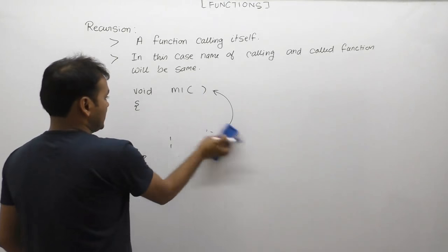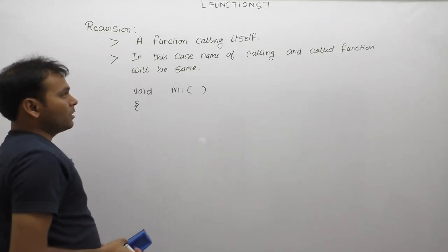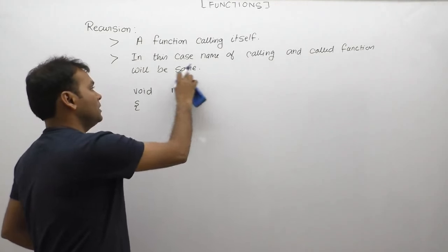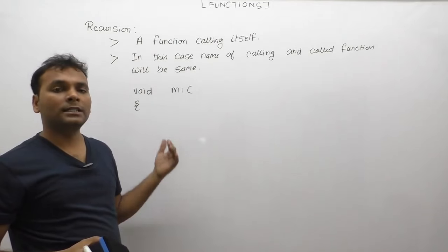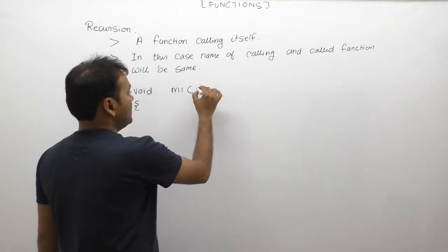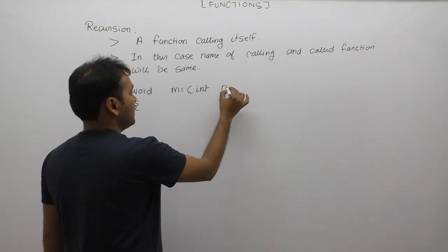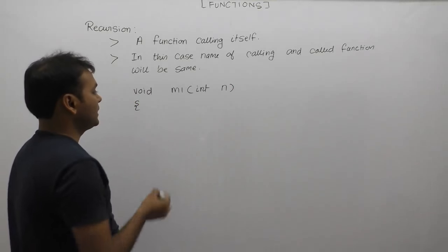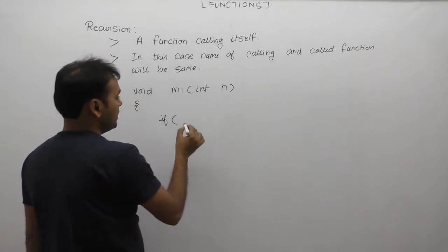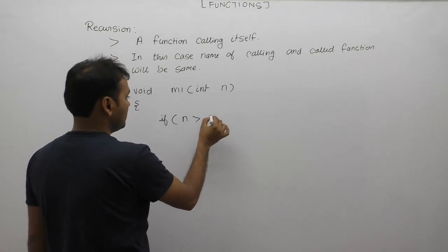Let's see how to solve problems of recursion and understand the output of recursive function calls. We will discuss many examples related to recursion one by one in next sessions. For this simple example, we are declaring a user-defined function with the signature: function with parameter int n. Inside that, we are providing an if condition: if n is greater than 0.